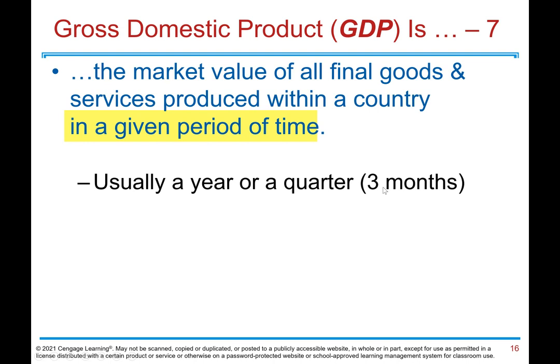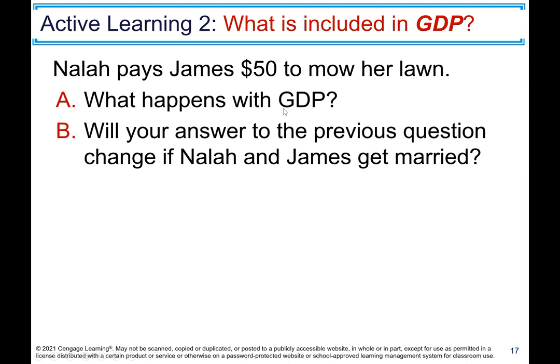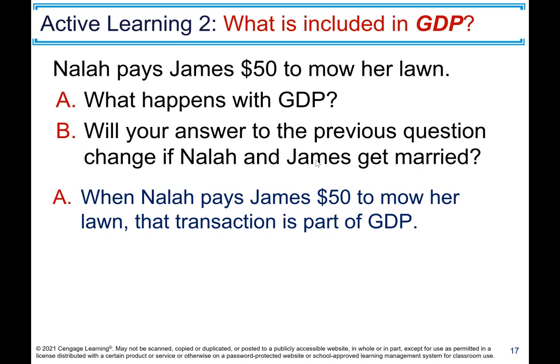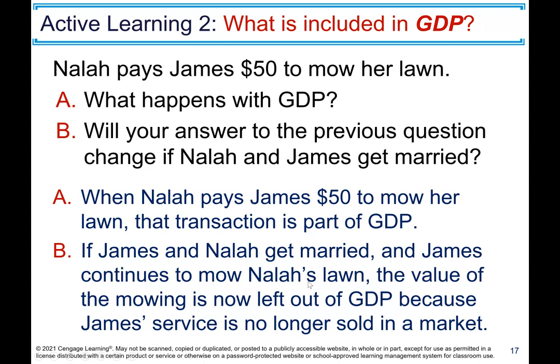Active Learning 2: What is included in GDP? Nala pays James $50 to mow her lawn. Will your answer change if Nala and James get married? When Nala pays $50 to mow her lawn, that transaction is part of GDP. But if James and Nala get married and James continues to mow Nala's lawn, the value of the mowing is left out of GDP because James's service is no longer sold in the market.